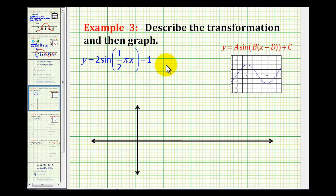Welcome to a third example of describing and then graphing a trig transformation. Here we have y equals two sine of the quantity one-half pi x minus one.